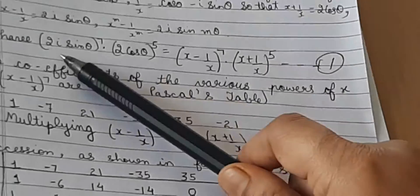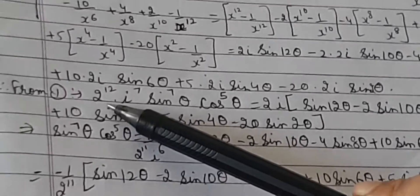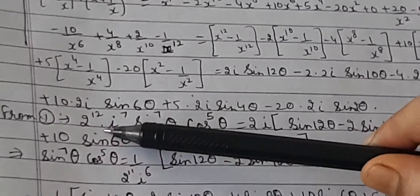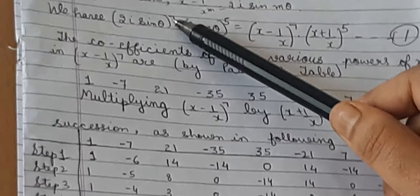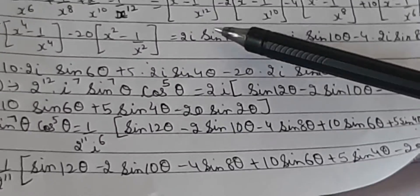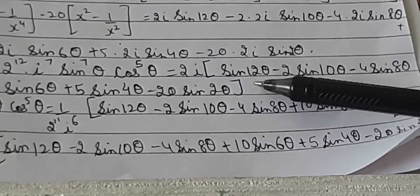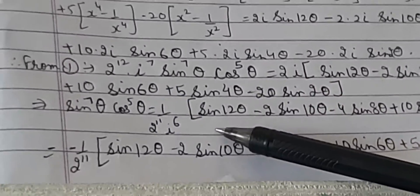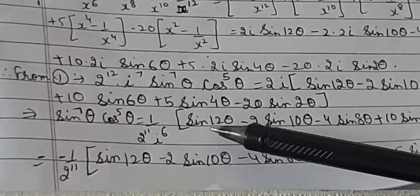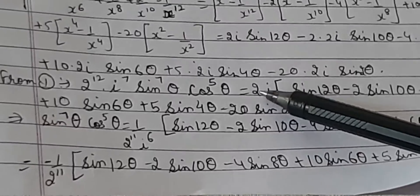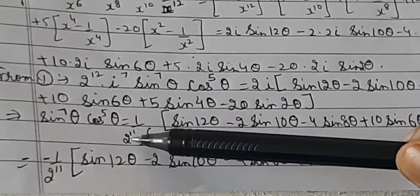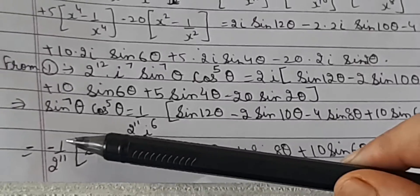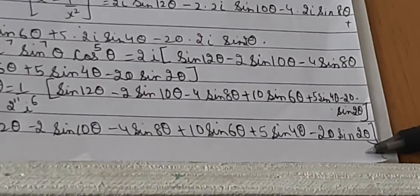From the full equation, the left-hand side is 2⁷ · 2⁵ = 2¹² · i⁷ · sin⁷θ · cos⁵θ, and taking 2i common from the right-hand side gives the equation. Cancelling one factor of 2 and one factor of i from both sides, we are left with 1/(2¹¹ · i⁶). Since i⁶ = −1, the final result is −1/2¹¹ times the trigonometric series.